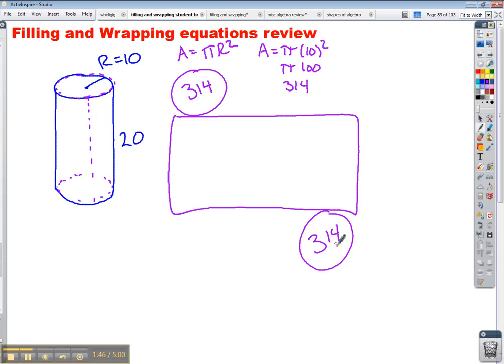Now, the tricky part for finding the surface area of a cylinder is finding the area of this rectangle. This distance from here to here is the height. In my example, I have a height of 20. This distance here is going to be the circumference because it wraps around the circle. Circumference is diameter times pi. The diameter of this circle is 20, so I have 20 times pi.